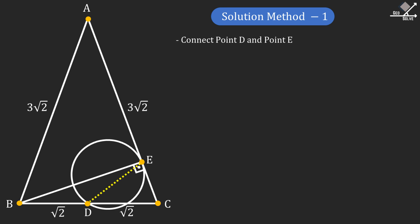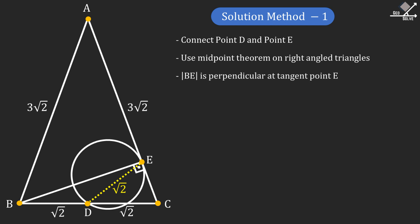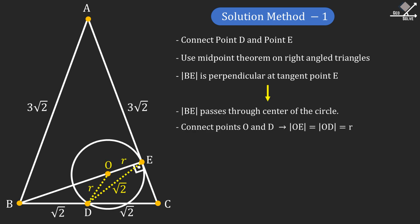Using the midpoint theorem on right angle triangles, line segment DE will be square root of two units. Notice that line segment BE is perpendicular at tangent point E. This means that line segment BE must pass through the center of the circle. Then let's connect points O and point D, so line segments OE and OD will be R units.